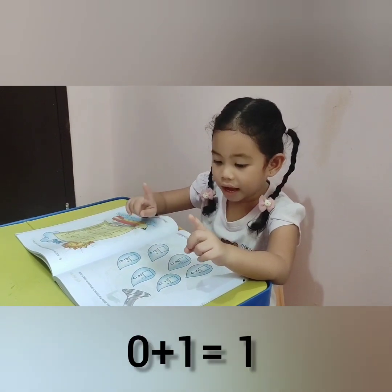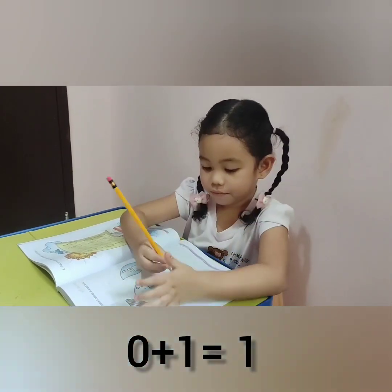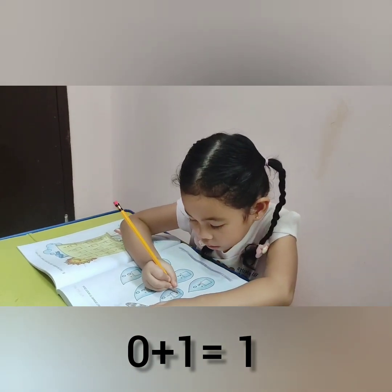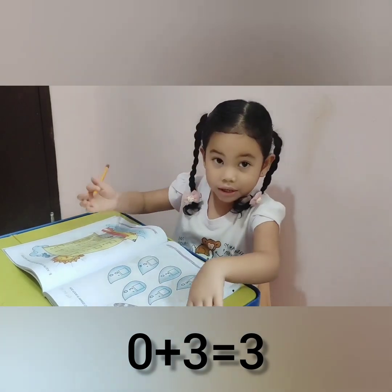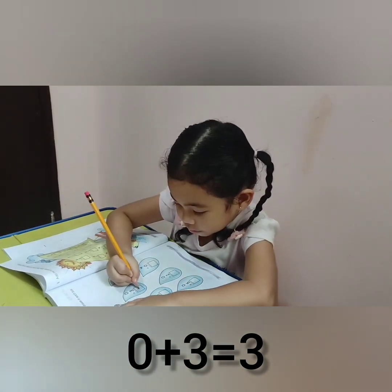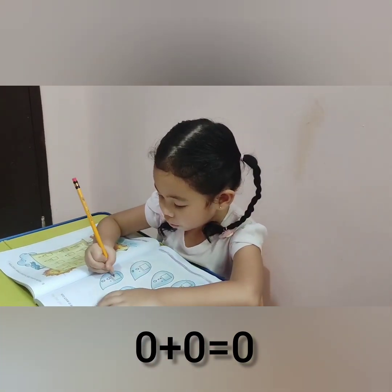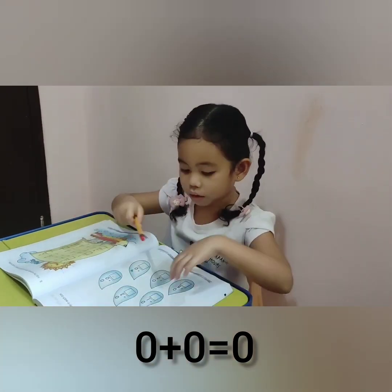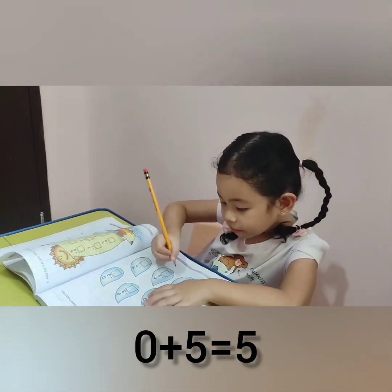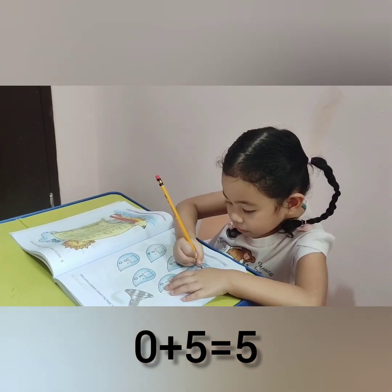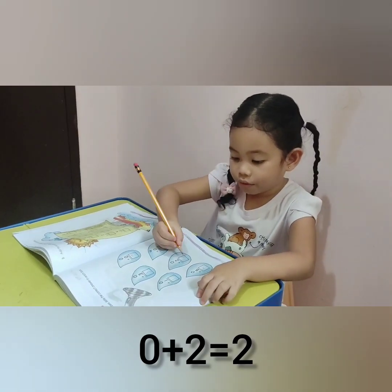0 plus 1 equals 1. 0 plus 3 equals 3. 0 plus 0 equals 0. 0 plus 5 equals 5. 0 plus 2 equals 2.